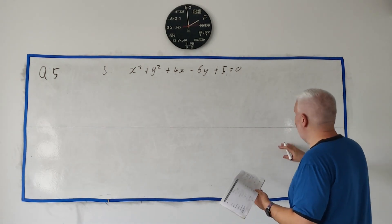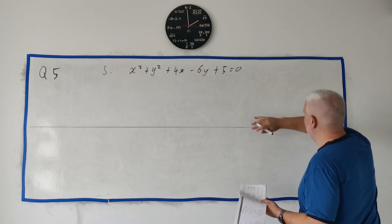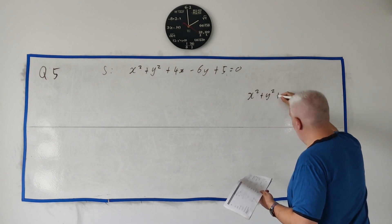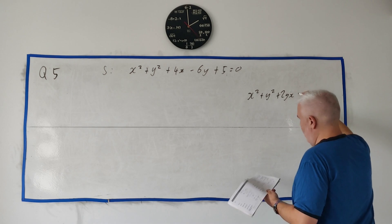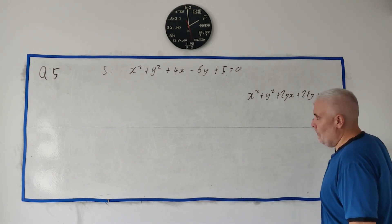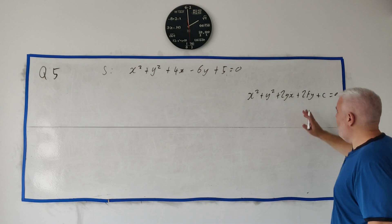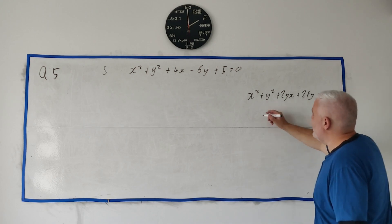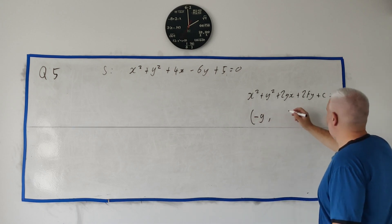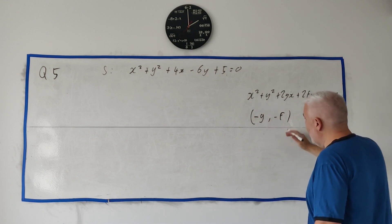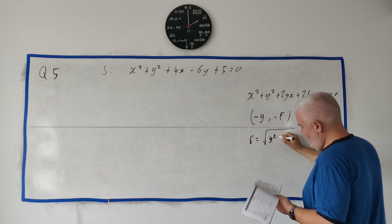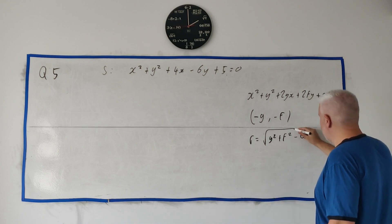Your formulae booklet does have an equation of a circle that looks like this: x² + y² + 2gx + 2fy + c = 0. It tells you in the book that when an equation looks like this, the centre is simply (−g, −f) and the radius is equal to √(g² + f² − c).